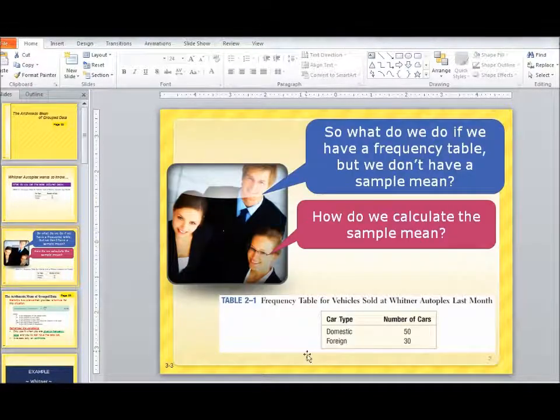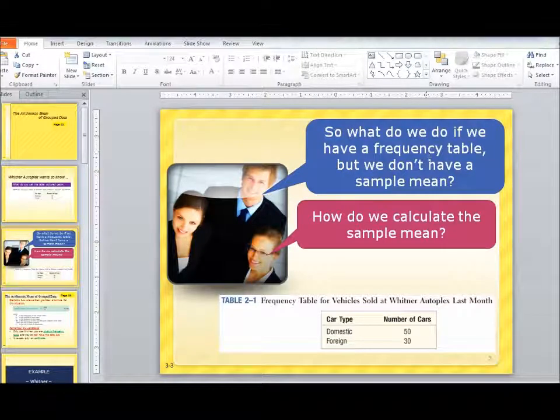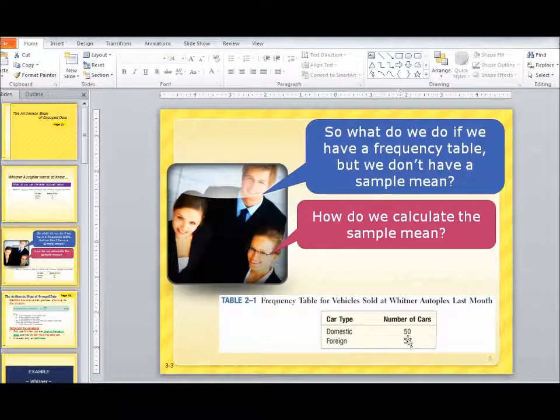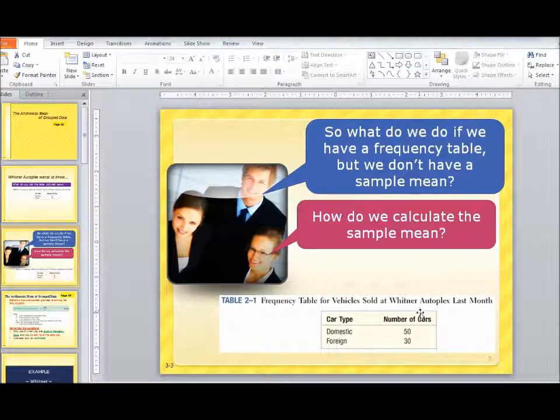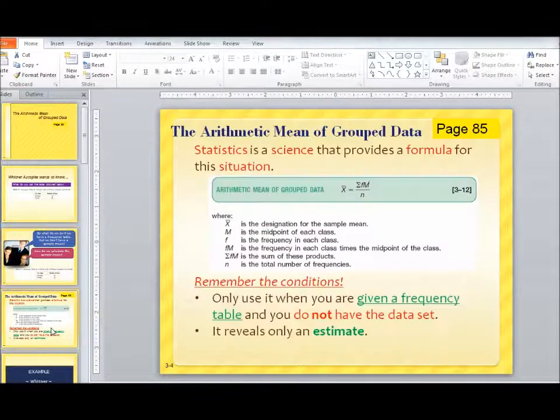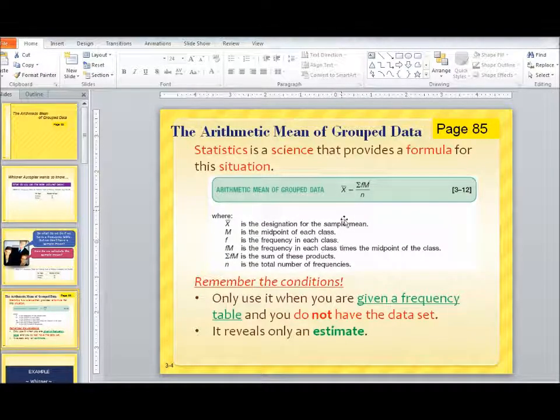This is nominal data, so of course we could not calculate an average or anything like that, but my point is once we summarize the data, we have this frequency table, we may want to ask further questions. The question that my young executives ask here is, what do we do if we have a frequency table but we don't have the mean? How do we calculate a sample mean, the average of a sample, after we have thrown away or it has become inconvenient to access the raw data? Well, we use this formula.